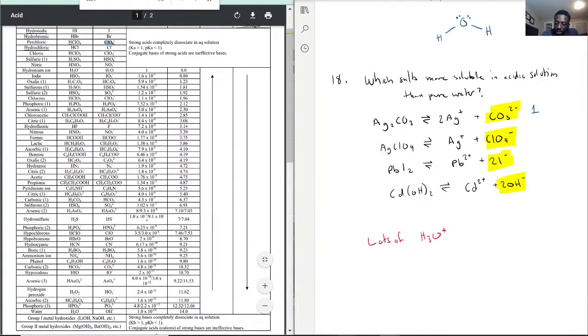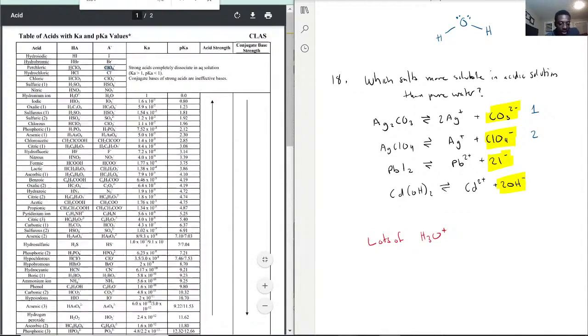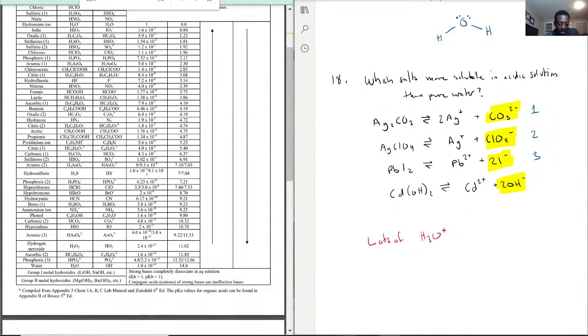Let's look at iodide. Hydrogen iodide, it's even higher up, so it's going to be like number three. But OH⁻ is all the way at the bottom.